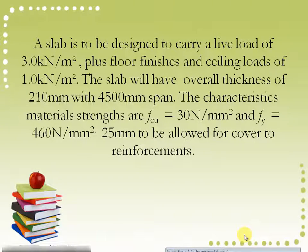Here is the example. A slab is to be designed to carry a live load of 3.0 kN/m² plus floor finishes and ceiling loads of 1.0 kN/m². The slab will have an overall thickness of 210mm with 4500mm span. The characteristic material strengths are fcu = 30 N/mm² and fy = 460 N/mm². 25mm is to be allowed for cover to reinforcements.